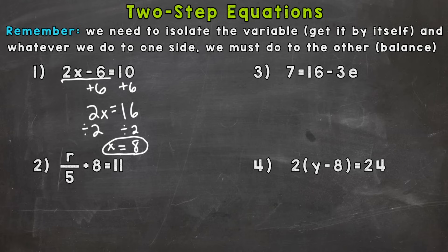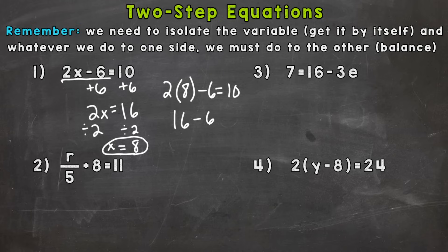Let's plug in that 8 into the original equation and see if we get the correct answer. So 2 times 8 minus 6 equals 10. It's always a good idea to check if that answer works out. 2 times 8 is 16, minus 6 does give us that 10. So we have the correct answer: x equals 8.